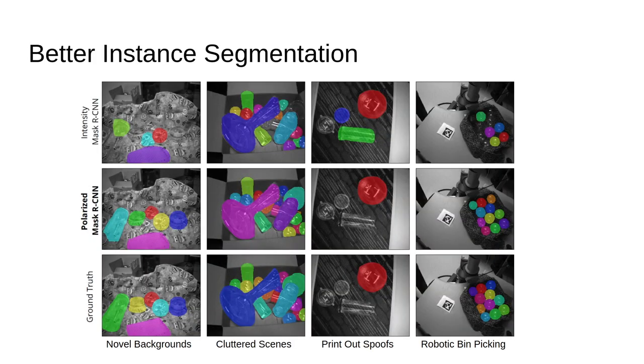So what are the results? First, we just get better instance segmentation across the board. If you look at the generalization to novel backgrounds, intensity mask R-CNN has a hard time, but polarized mask R-CNN does much better. Then in cluttered scenes, we do better on the edges. In printouts, we're not able to be fooled by the spoofs on the top. And then finally, we combine all of this for good robotic bin picking.